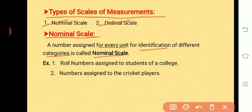For example, roll numbers assigned to students of a college, or numbers assigned to cricket, hockey, or football players. These numbers are assigned simply as an identification or symbol, and that is nothing but nominal scale.